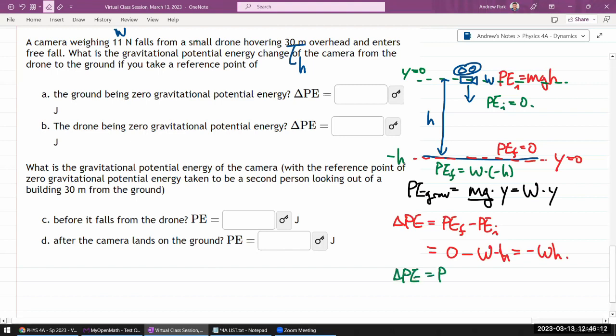Now here's the thing: when you take the difference of the final potential energy minus the initial potential energy, so final potential energy minus wh minus initial potential energy zero, that difference ends up being the same as what it was before. The difference hasn't changed.